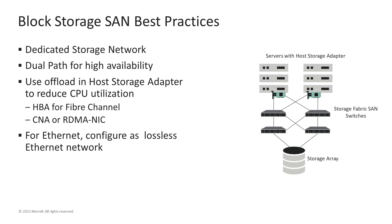All Fibre Channel adapters are fully offloaded. If you're using Ethernet, consider using a converged network adapter with iSCSI hardware offload, or use RDMA-enabled NICs for NVMe storage. If Ethernet is the fabric of choice, make sure you use a lossless Ethernet configuration to maximize storage performance by enabling features like data center bridging, priority flow control, and enhanced transmission selection. Be aware, however, that this makes for a much more complex network configuration and can limit the scalability of your SAN fabric to no more than two hops.